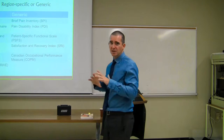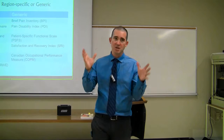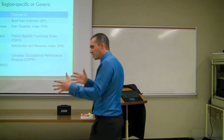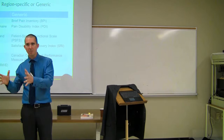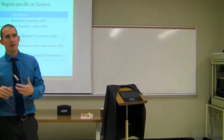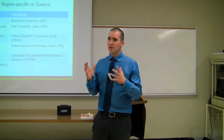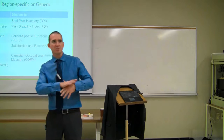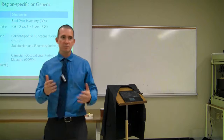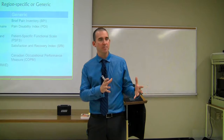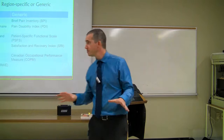When talking about pain-related function and interference, we can group scales into two broad categories. First, region-specific scales — intended specifically to measure disability or pain-related impairments in a specific body region such as the neck, low back, arm, wrist, or leg. Second, generic scales that give a broad overview of things we think everybody wants to be able to do — walk, sleep, take care of themselves — and can be applied across any region or condition.